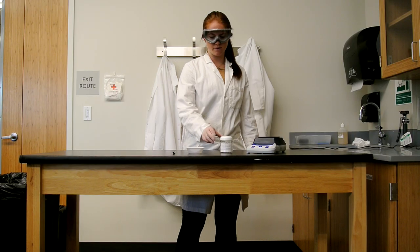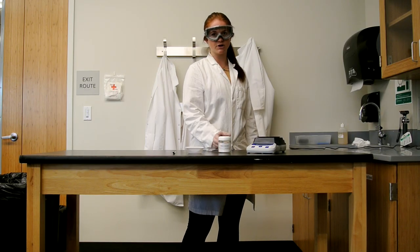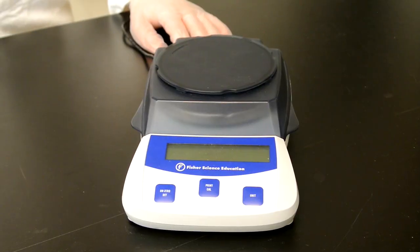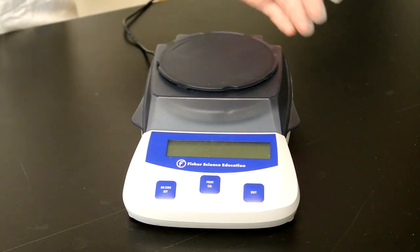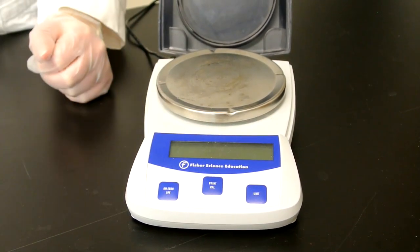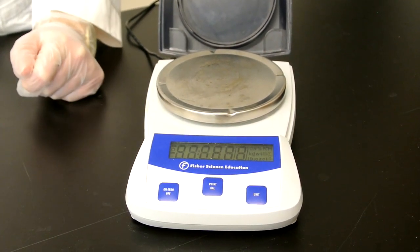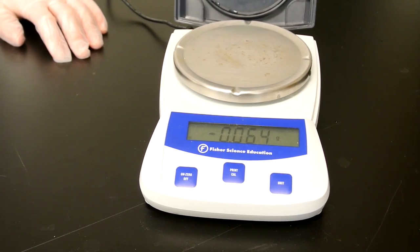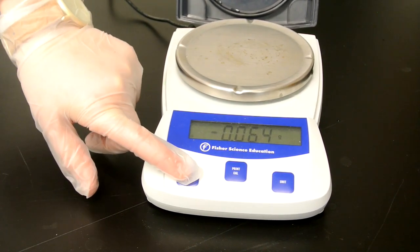Today, I'm going to measure out 3 grams of sodium carbonate. First, plug in the scale. Before we begin measuring the solids, you need to open the lid and turn on the scale. Notice that the scale does not read zero. To correct this, press the zero button.